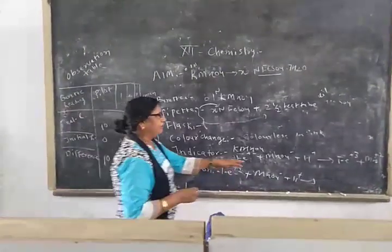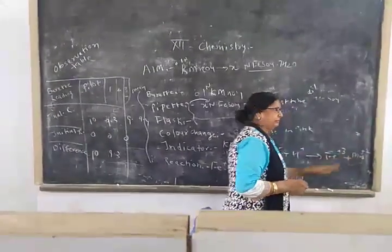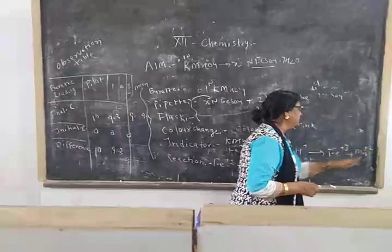So the final product will be: Fe2+ is converted into Fe3+. MnO4 minus goes to Mn2+.